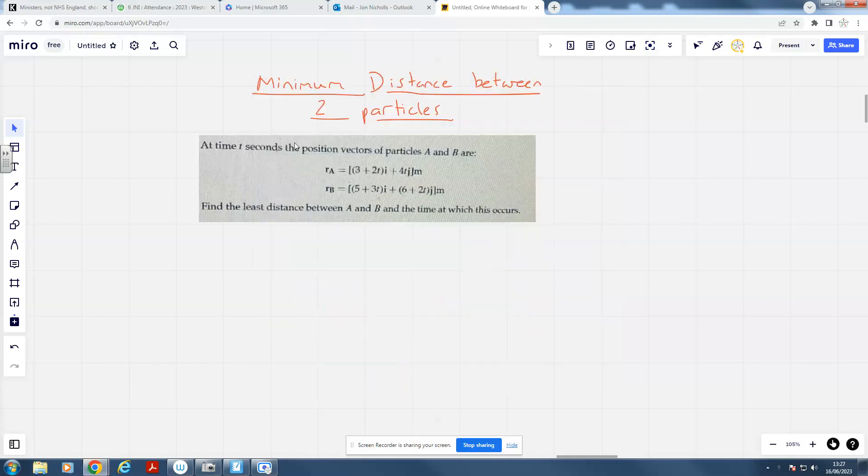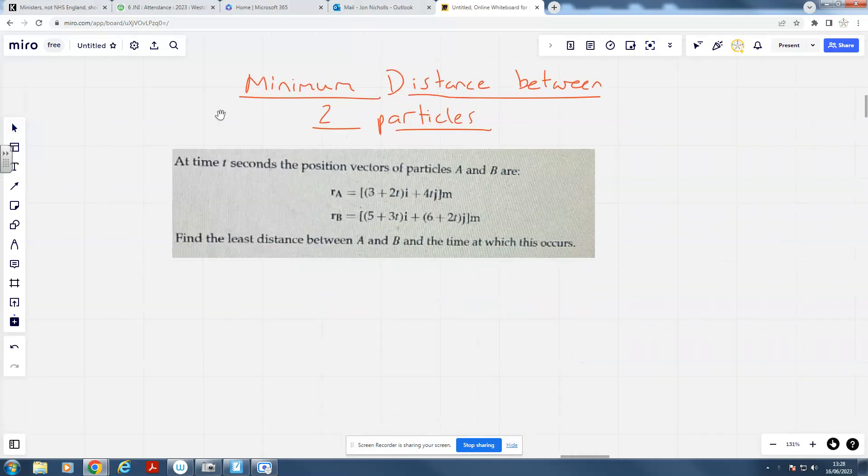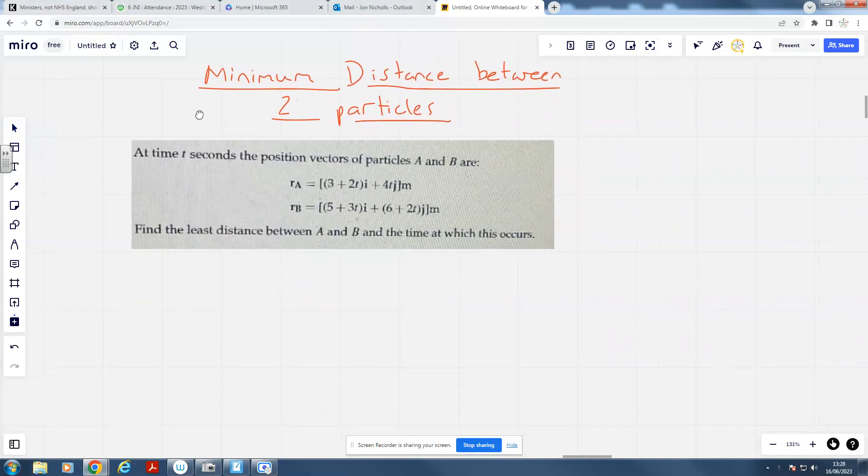Hello and welcome to a video. This time, this question was sent to me by Izzy. It's on minimum distance between two particles. I don't know if it's going to come up - I never know what's coming up. But I feel like it was more common, this kind of question, in the old spec than the new spec. But it is still in the book. And I think this is from the Pure Maths textbook, interestingly enough. And obviously you've had your Pure Maths exams, but it is possible for it to turn up.